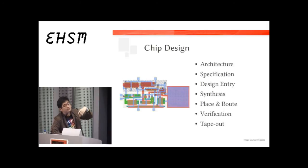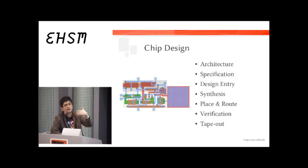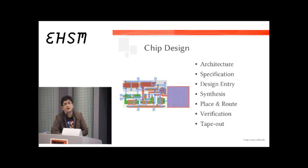After synthesis, we bring it through place and route, which literally places the individual circuit elements on the silicon and then wires them up. Then we verify the entire thing — running a bunch of checks to make sure it will work. Then we tape out, which means we send it to the fab and they make the physical chip. These are the things a typical microprocessor designer would need to know in terms of chip design.